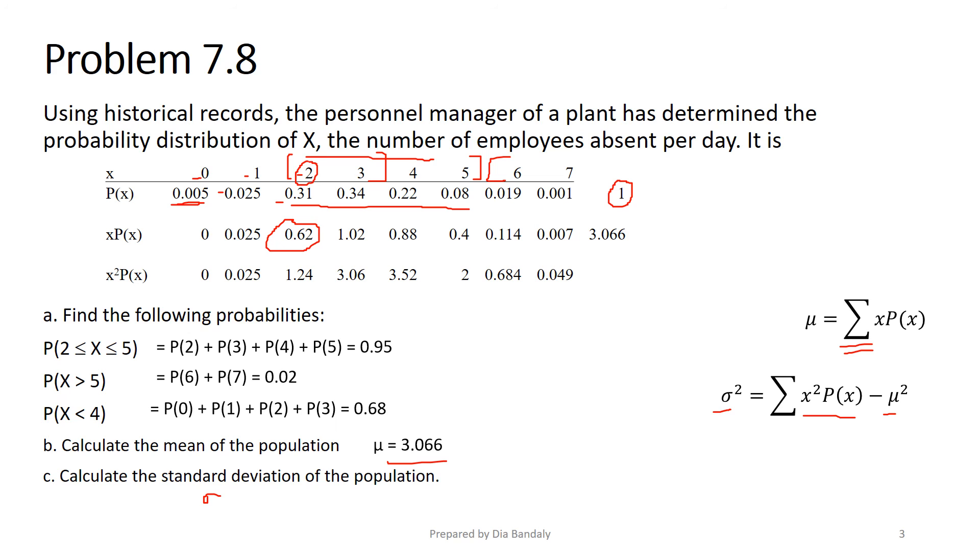σ² has two parts. The first part is when I sum up all X² times P(X), which is 10.587. I need to subtract the squared mean from the first part, and we get σ² equal to 1.177. Remember, the question asked for standard deviation. It's very easy because standard deviation is the square root of the variance, which is 1.085. I hope that was clear enough for you.